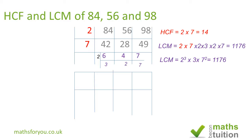Continuing the LCM: times 3, times 2, and then times 7. If asked to express the LCM as a product of prime factors, the answer is 2 cubed times 3 times 7 squared, which equals 1176. Now why don't you have a go at 36, 42, and 81 and see what you get.